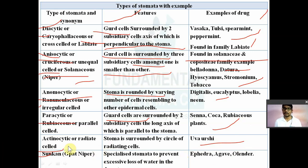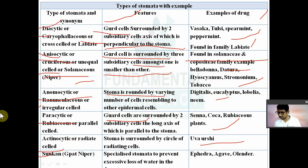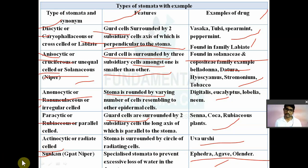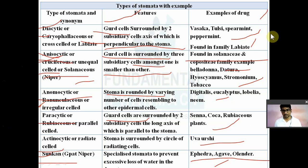The last type is the sunken type of stomata, which is a specialized stomata for the prevention of excessive water loss in desert plants. For example, Ephedra grows in the desert, and to prevent excessive water loss, this specialized type of stomata is present. This was a question in GPAT — what type of stomata is present in Ephedra? Ephedra and oleander have this sunken type of stomata. Questions on actinocytic stomata and sunken stomata have appeared in NIPER exams as well.